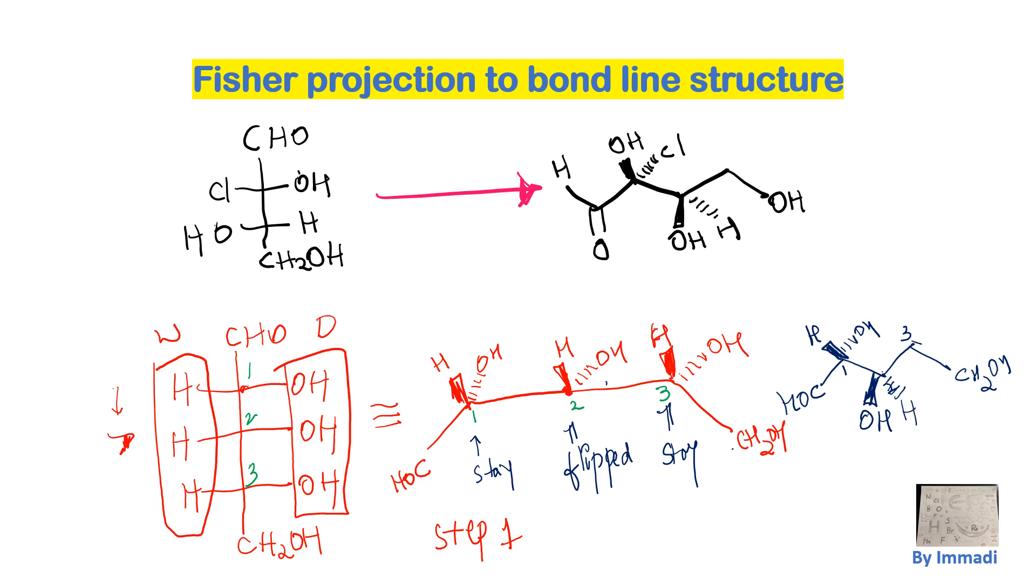3 is going to stay, so which will be OH on the dash and hydrogen on the wedge. So this is how you draw the bond line structures.